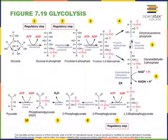In step 8 of glycolysis, phosphoglycerate mutase catalyzes an isomerization reaction that reorganizes 3-phosphoglycerate into 2-phosphoglycerate. Then in step 9, the enzyme enolase converts 2-phosphoglycerate into phosphoenolpyruvate, releasing a molecule of water. Finally, in the last step of glycolysis, pyruvate kinase transfers a phosphate group from phosphoenolpyruvate to ADP, producing a molecule of ATP and pyruvate.